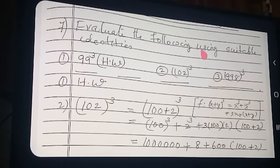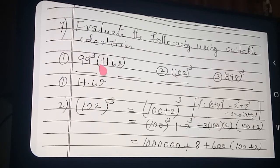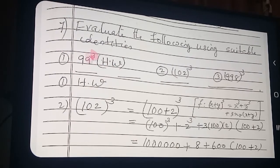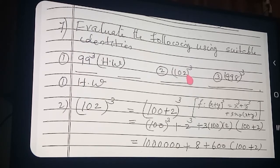Evaluate the following using identities. 1st sum is home off — very simple sum, that is why I am giving it as homework. And 102 the whole cube — 98 the whole cube — we will explain.